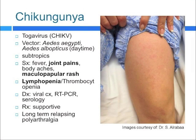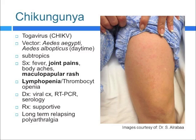Next is chikungunya. It's a togavirus distributed by the Aedes aegypti and Aedes albopictus mosquitoes, found in the subtropics. Patients are more likely to get joint pains and a maculopapular rash, distinguishing it from dengue. On CBC, you're more likely to see lymphopenia. Diagnosis early on can be done by viral culture; within five to seven days, you can also do reverse transcriptase PCR. As the patient has had symptoms longer, you can consider serology. Treatment is supportive, and the most common long-term complication is polyarthralgia.